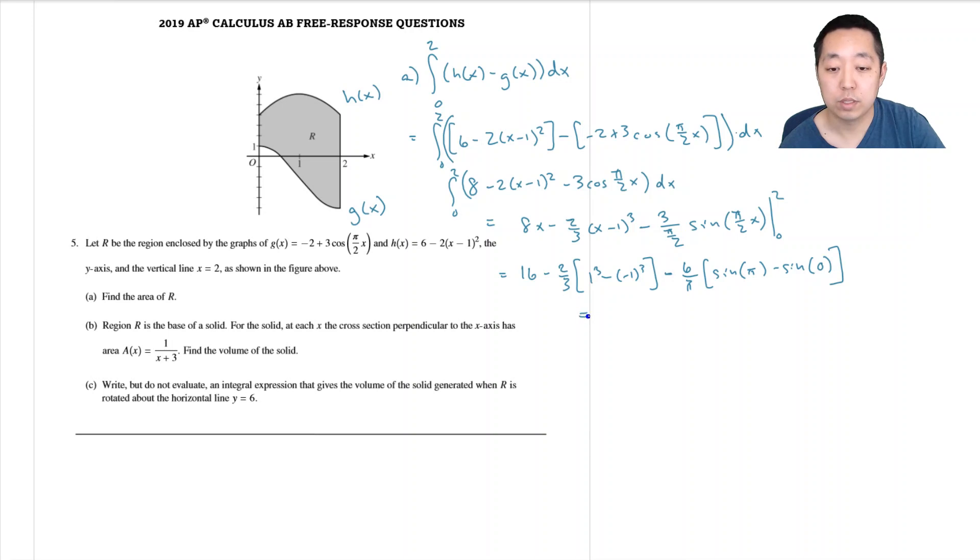And then here is going to be minus 6 over pi sine of pi minus sine of 0. This whole thing is 0 here, so this is going to be 16 minus 1 plus 1 is 2, so it's minus 4 thirds.